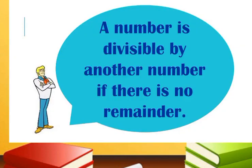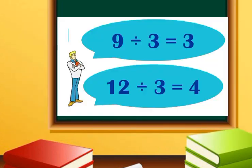And now, when can we say if a number is divisible or not? A number is divisible by another number if there is no remainder. For example, 9 divided by 3 equals 3, and 12 divided by 3 equals 4.